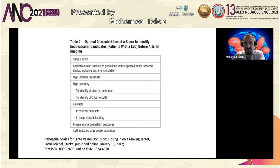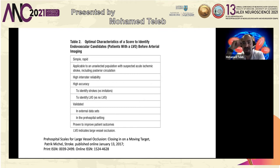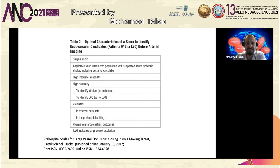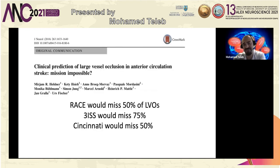The 2017 American Stroke Association optimal scale criteria require high accuracy to identify LVO versus no LVO, validated in external datasets. There's a recent randomized trial showing most LVO scales work similarly overall, with differences in sensitivity versus specificity — one more sensitive, one more specific. RACE performed very well in overall accuracy, but still missed about 40 percent of LVOs. The study was from Holland or Denmark, and even when they tested all scales together, that is essentially what they found.